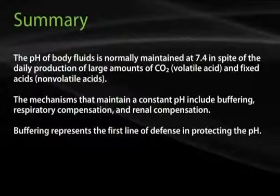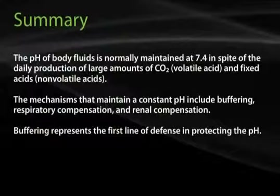The pH of body fluids is normally maintained at 7.4, in spite of the daily production of large amounts of carbon dioxide, which is a volatile acid, and fixed acids, or non-volatile acids. The mechanisms that maintain a constant pH include buffering, respiratory compensation, and renal compensation.